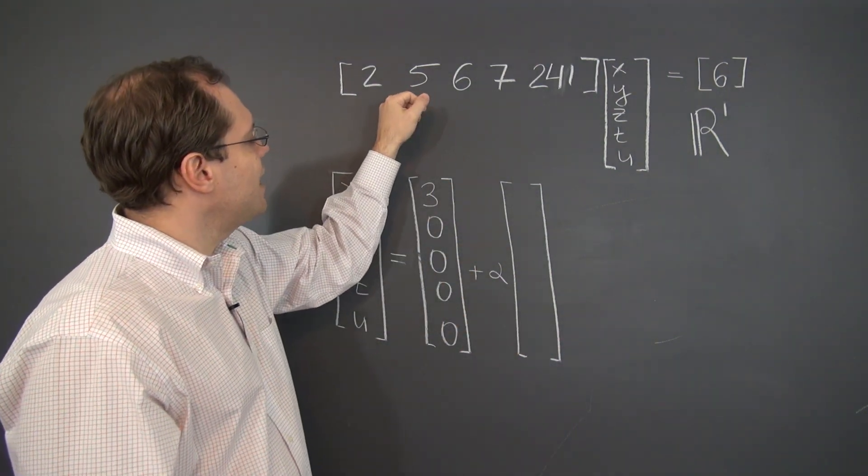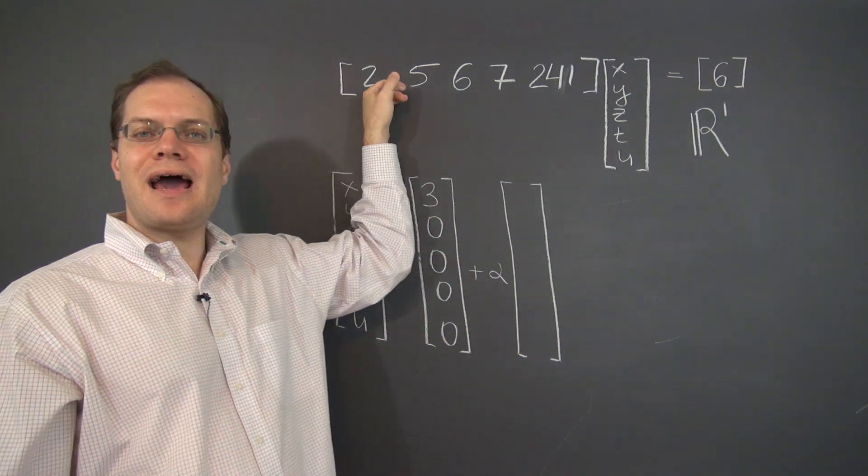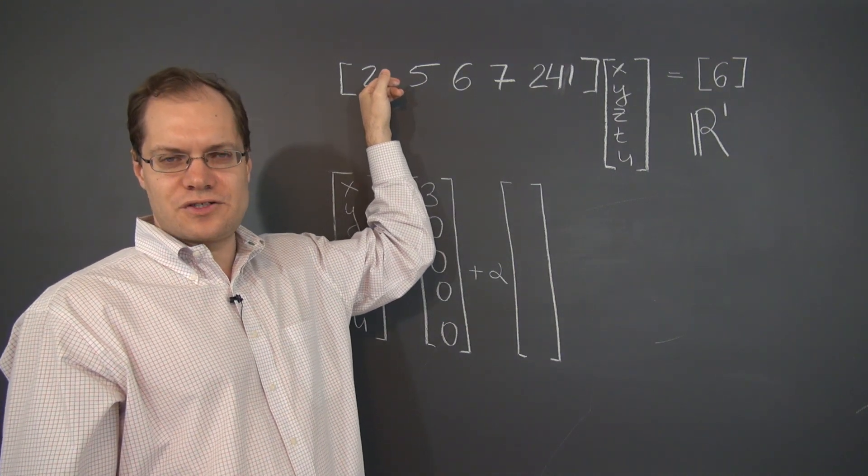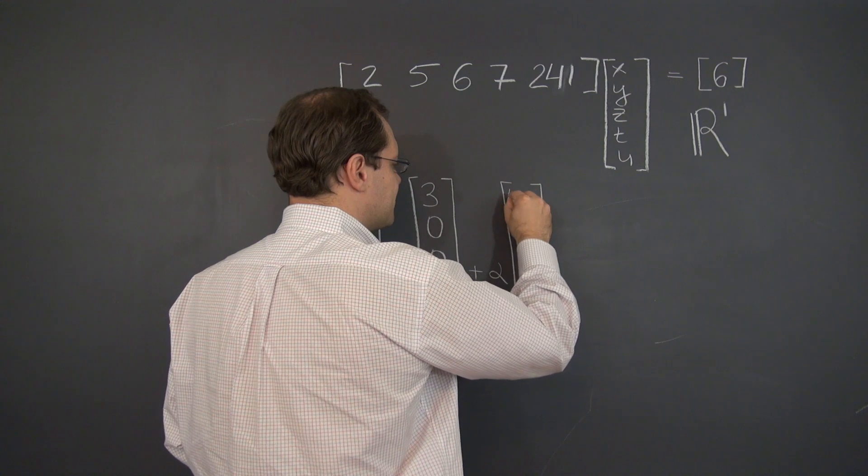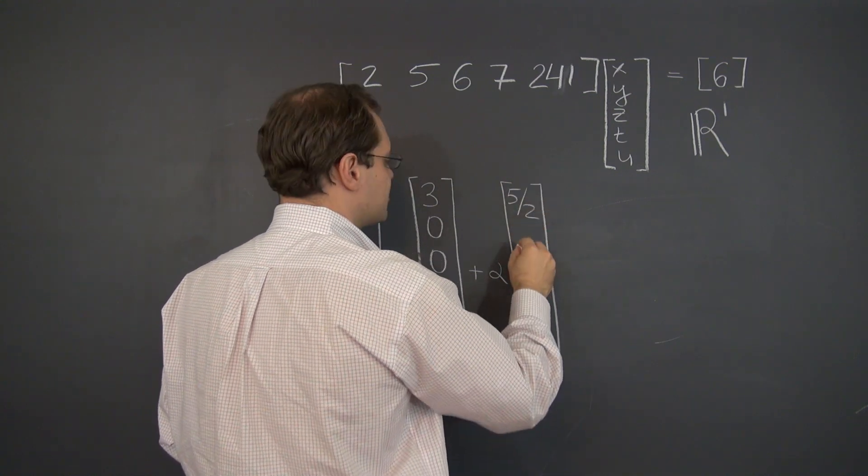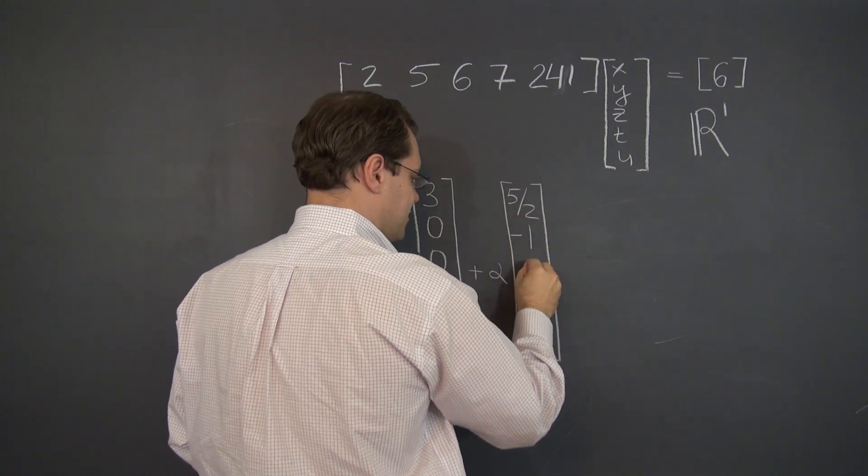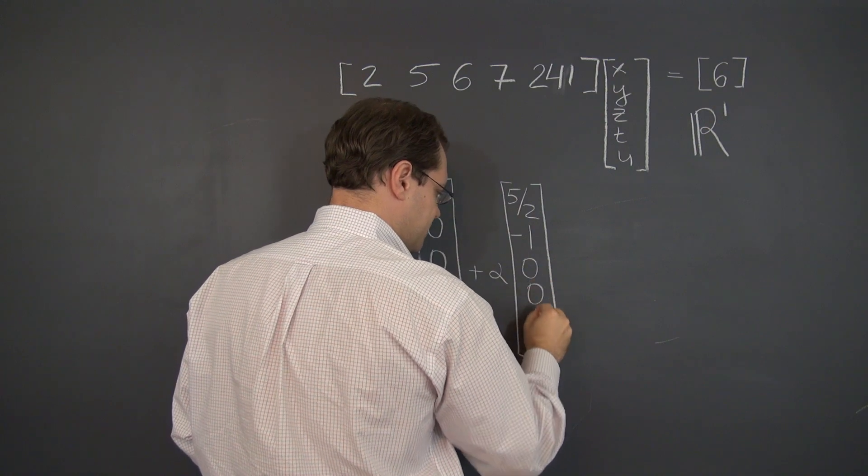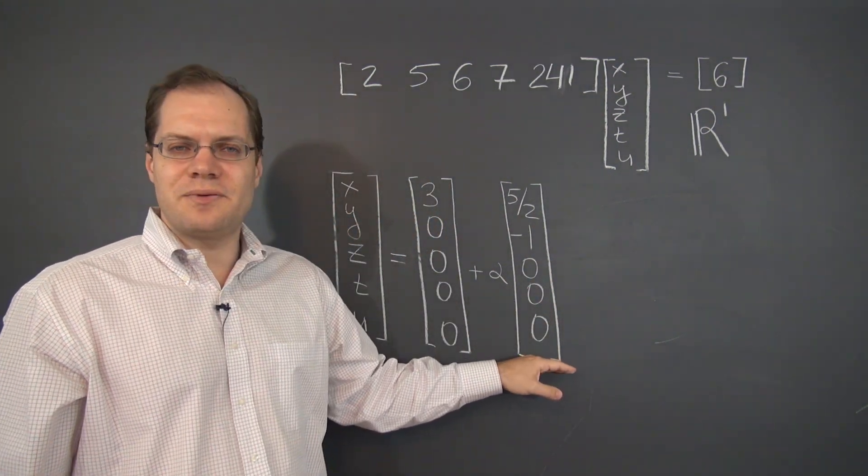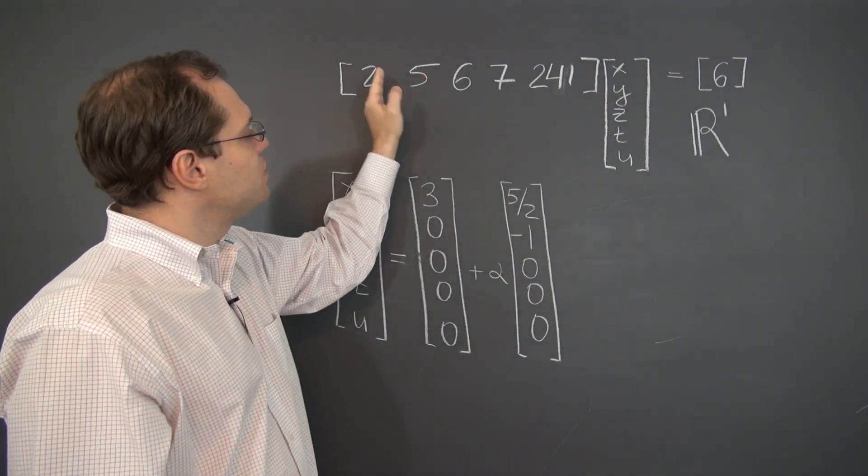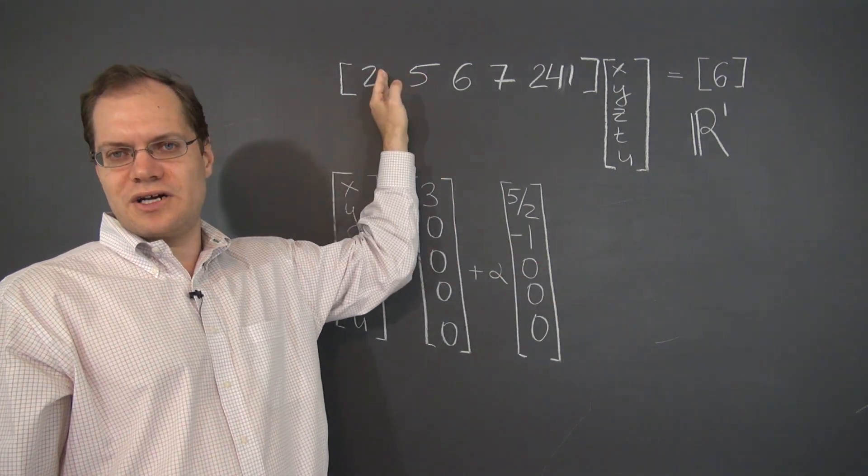So the second column is five halves of the first one. So what we can do is take five halves of the first, subtract the second, and ignore the rest. And this is the element in the null space that exploits the relationship between the first two columns.